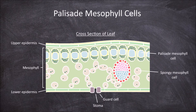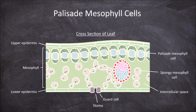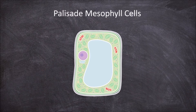The spongy mesophyll cells below them are also a site of photosynthesis, but not as much as in the palisade mesophyll. The spongy mesophyll also has intercellular space around them, which allows for the exchange of gases in and out through the stoma. The palisade mesophyll cells are rectangular cells.